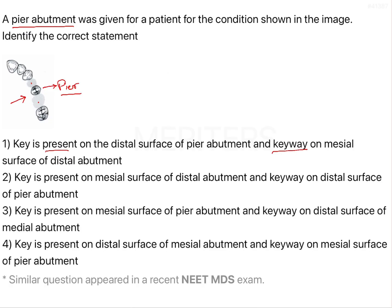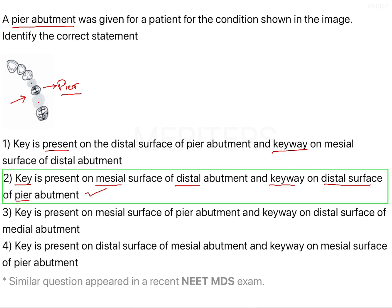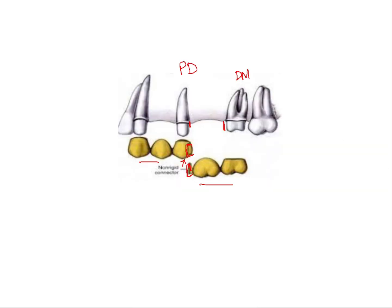Looking at the options: the first option says the key is on the distal surface of the pier abutment and the keyway on the mesial surface of the distal abutment — this is wrong. The second option says the key is on the mesial surface of the distal abutment and the keyway on the distal surface of the pier abutment — this is correct. Looking at the image again: the distal-most abutment has the key on its mesial surface, and the pier abutment has the keyway on its distal surface.